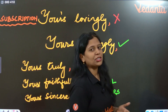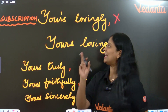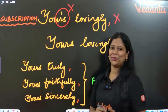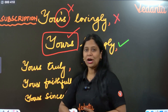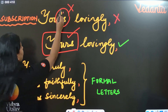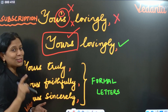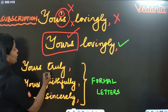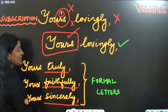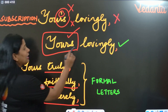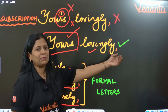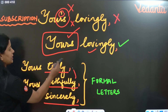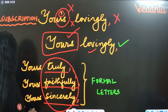When writing the subscription, you can use 'Yours lovingly,' 'Yours faithfully,' or 'Yours sincerely.' Do not use an apostrophe — 'Your's' with apostrophe is wrong. Simply write 'Yours' like this — that is the correct one. For formal letters, use 'Yours truly,' 'Yours faithfully,' or 'Yours sincerely.' For informal letters, use 'Yours lovingly' — because you are writing to your mother, father, family member, or friend. In official letters, use the formal closing words.